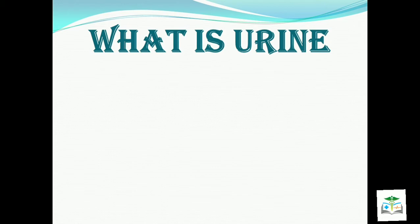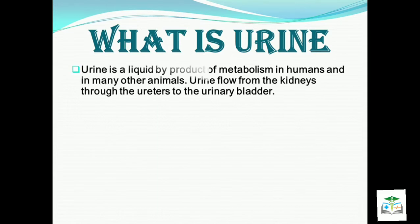Urine is a liquid byproduct of metabolism in humans and in many other animals. Urine's formation is in kidneys; it is stored in the urinary bladder, and released through the urethra.